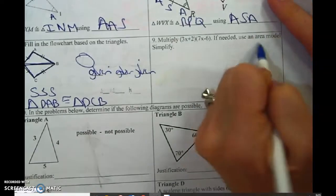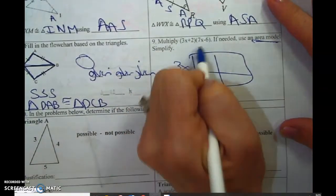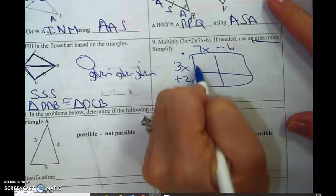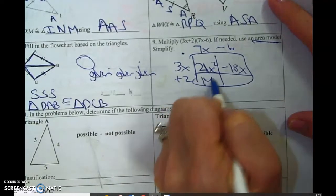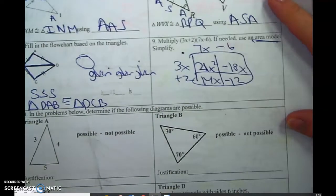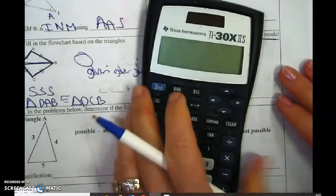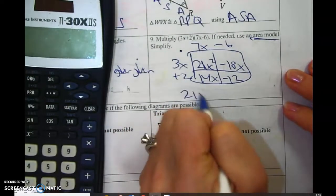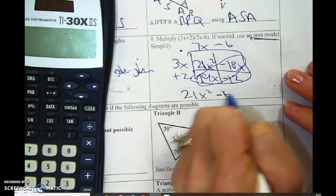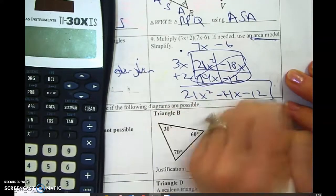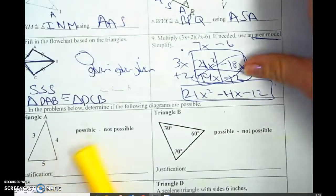They want you to multiply this using an area model. When they say area model, they mean box. I think a lot of you are really good at that, but make sure you multiply correctly. You don't want to get it wrong because you go too fast. If you're not sure what to do, use your calculator. 21x squared. These are the same, minus 4x, minus 12.